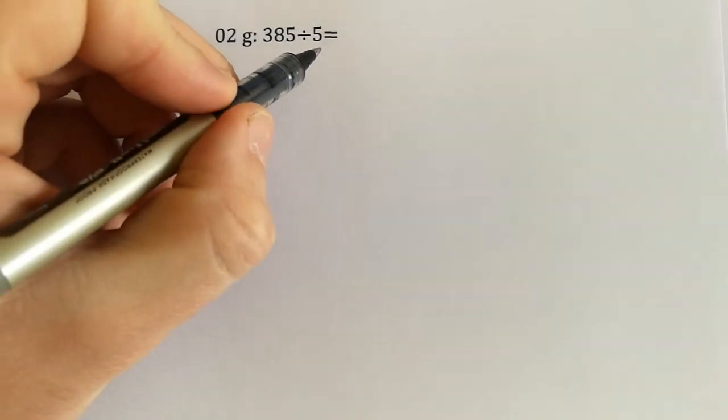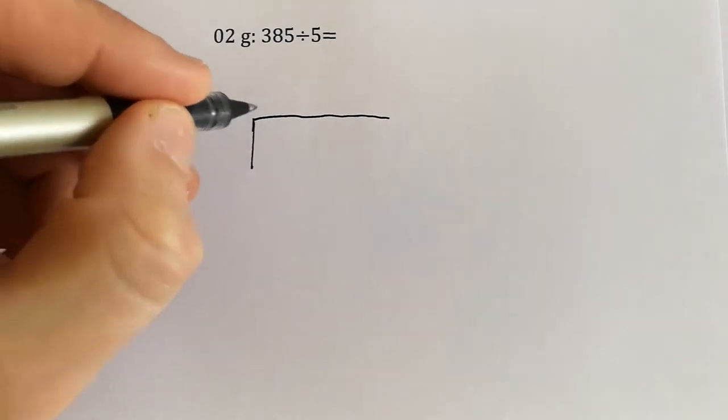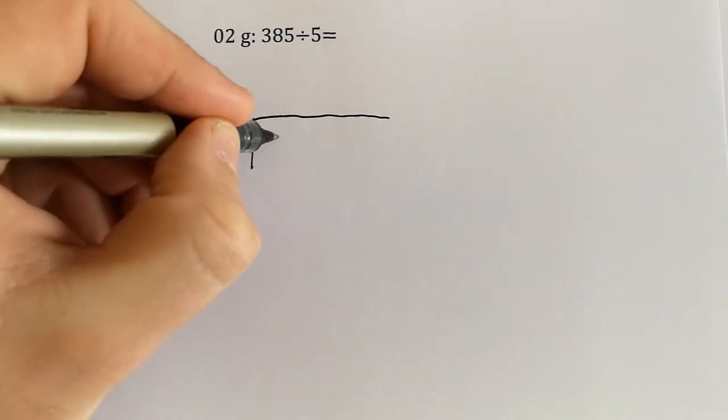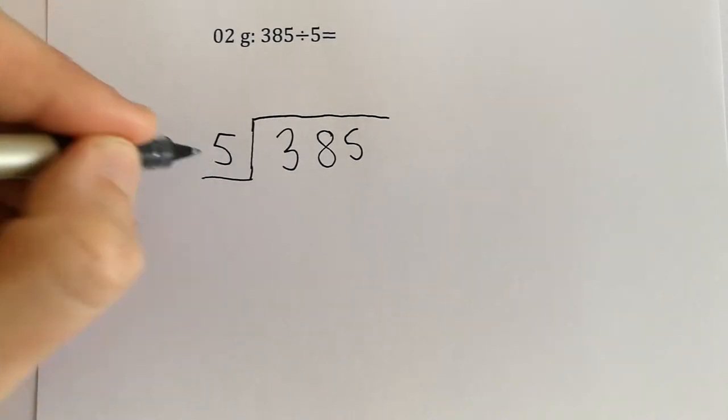Our next one is very similar to the last one, where we've got 385 divided by 5. We start off by doing the same thing where we put a little kind of bus stop, and 385 goes inside it, and we divide by 5.